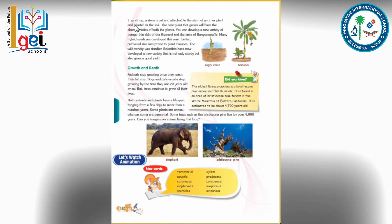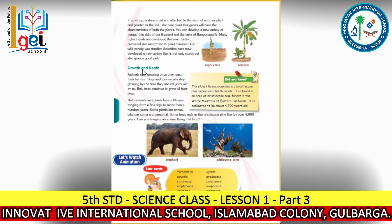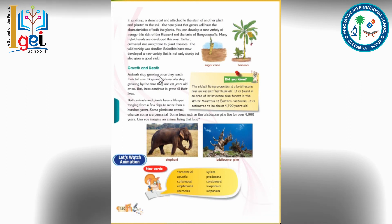In grafting, we cut a stem of a plant and attach it to another plant's stem, and it grows in that way. The new plant that grows will have the characteristics of both — the attached plant and the cut stem plant — so it has the growth characters of both.